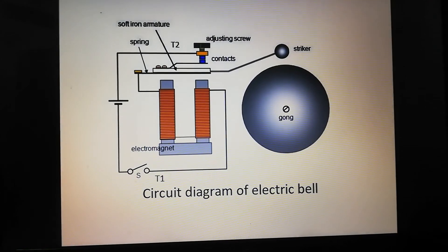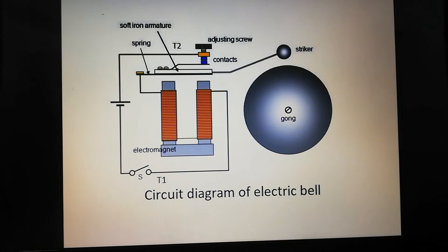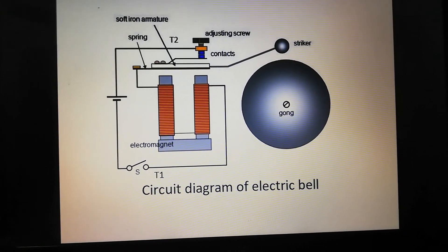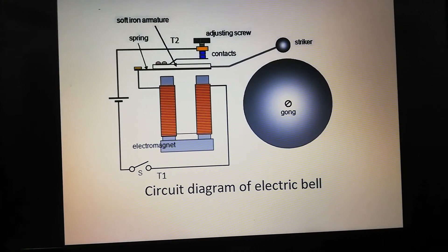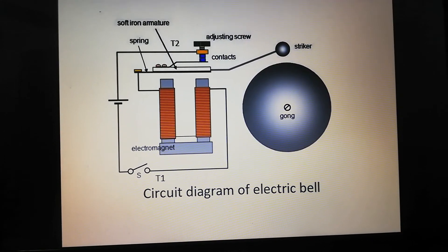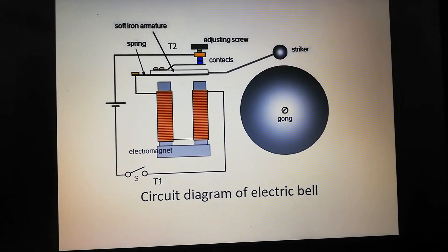Next is the working of electric bell. See the images. The switch is pressed and current flows through it. The electromagnet is powered and generates a magnetic field that attracts the iron strip towards it. The striker strikes the gong.